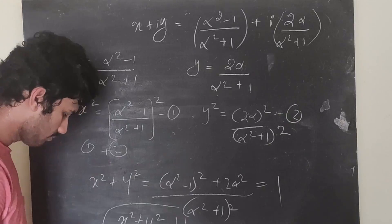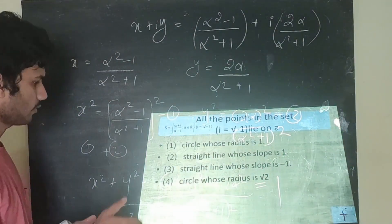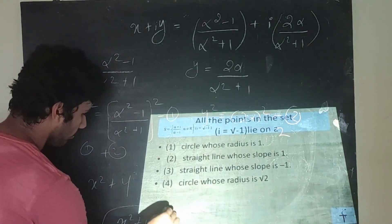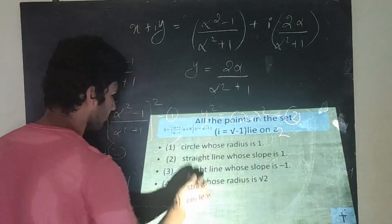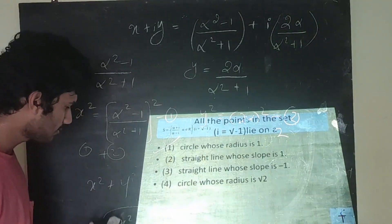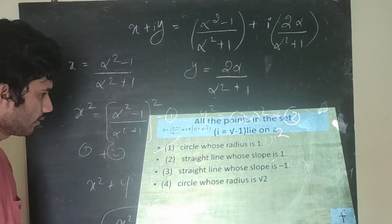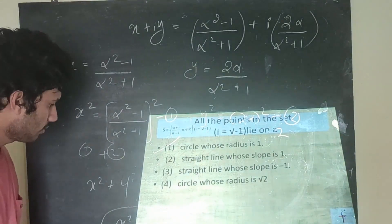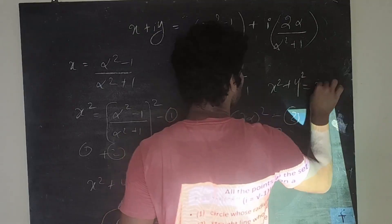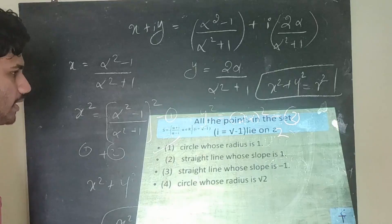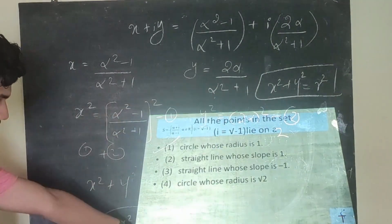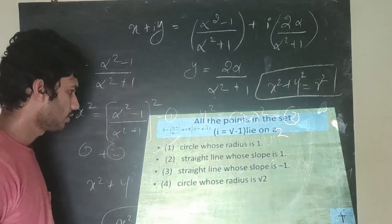Since x² + y² = 1, and the general equation of a circle is x² + y² = R², the radius R = 1. So all points in the set lie on a circle of radius 1. That is the answer — option A.